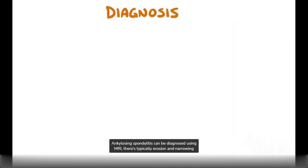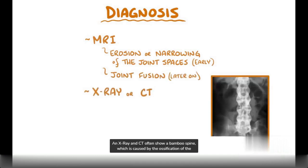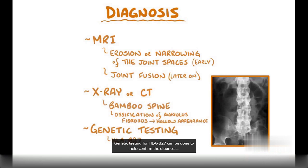Ankylosing spondylitis can be diagnosed using MRI, where there's typically erosion and narrowing of the joint spaces early on, and joint fusion later on. An x-ray and CT often show a bamboo spine, which is caused by the ossification of the annulus fibrosus on the outside of a straightened spine, giving it a hollow appearance. Genetic testing for HLA-B27 can be done to help confirm the diagnosis.